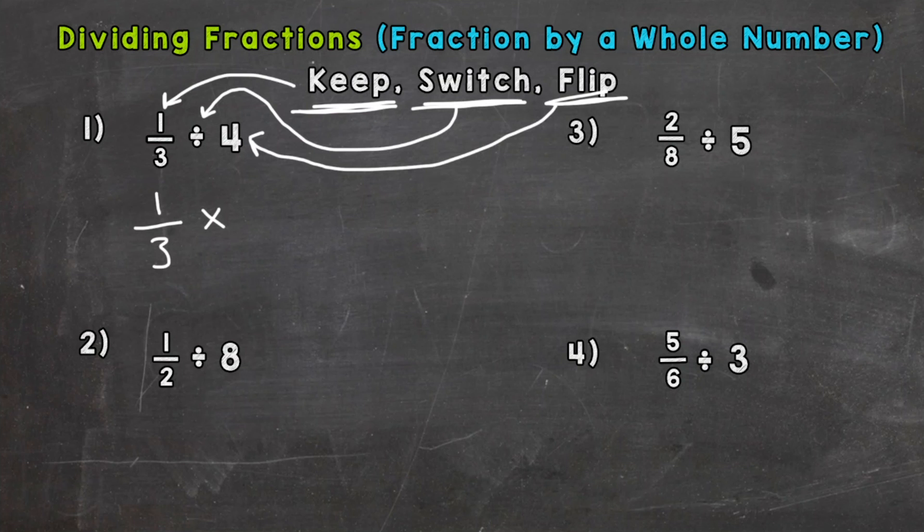And whenever we want to create a fraction out of a whole number, we just put that whole number over one. So now we need to flip it. The four needs to go to the denominator and the one as the numerator. So we actually get one-fourth as the flipped version of four.